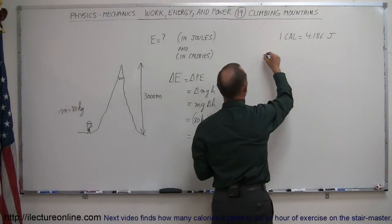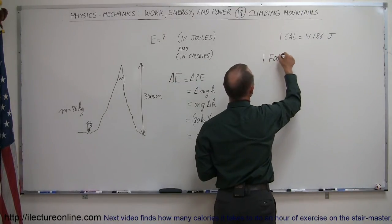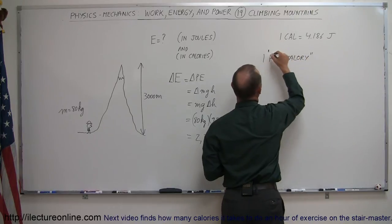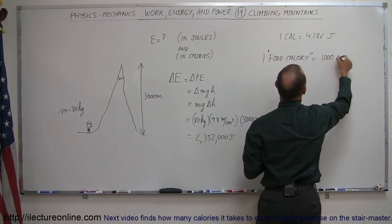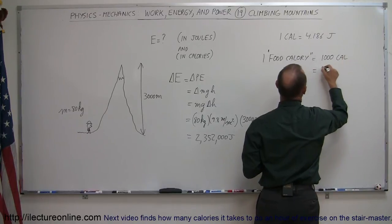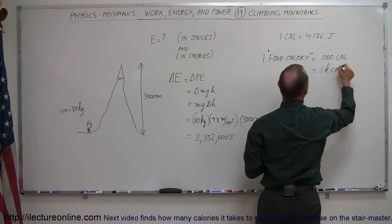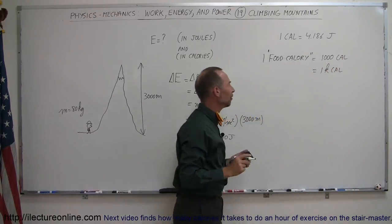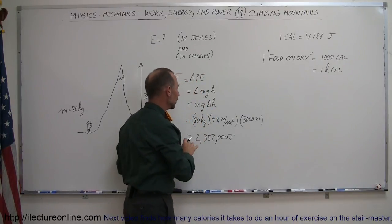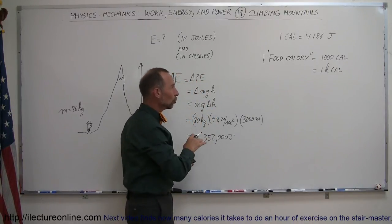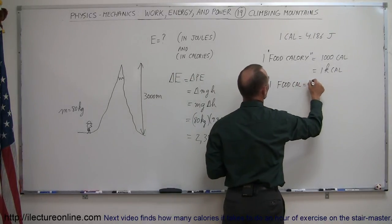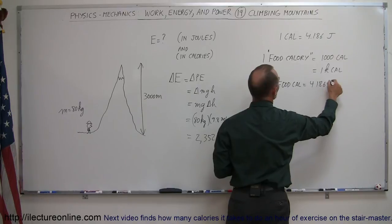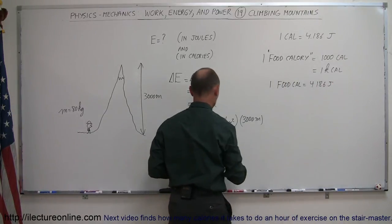A food calorie, 1 food calorie, is equal to 1,000 calories. So that's equal to 1 kilocalorie. So now we talk about something different. So if we're going to convert calories or food calories to joules, that means 1 food calorie is equal to 4,186 joules. Now we have a conversion factor.